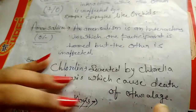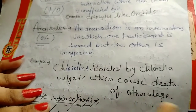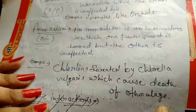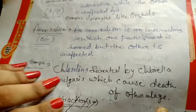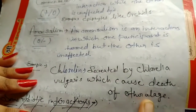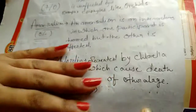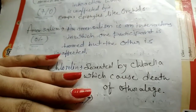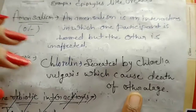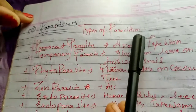Chlorellin secreted by Chlorella vulgaris causes the death of other algae. This is actually an example of antibiosis — a type of amensalism interaction.